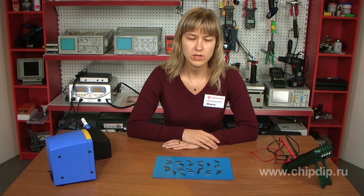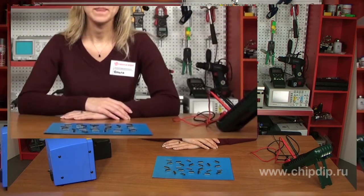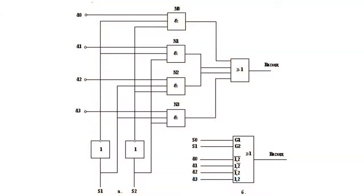A multiplexor, or commutator selector switch, is a device which has several signal inputs, one or more control inputs, and one output. A multiplexer allows transmission of a signal from one of the inputs to the output. The desired input is chosen by the relevant combination of the controlling signals.